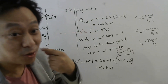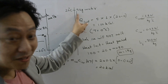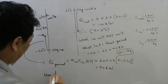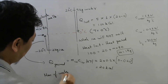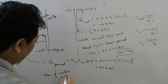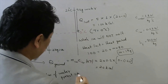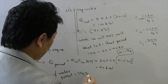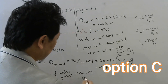Since 1 kg of ice melts, the final mass of water = 5 kg (original water) + 1 kg (from melted ice) = 6 kg.